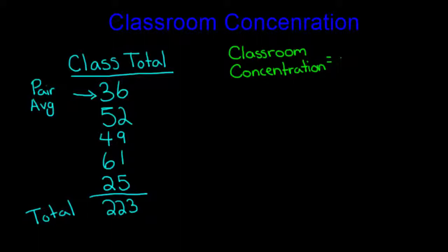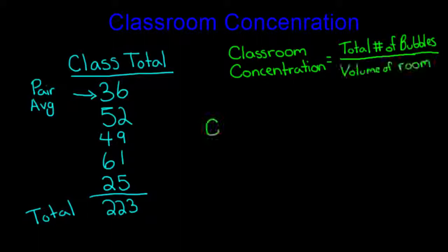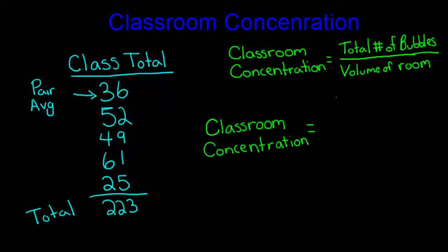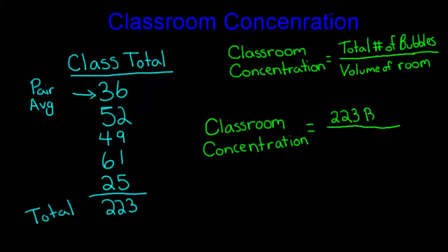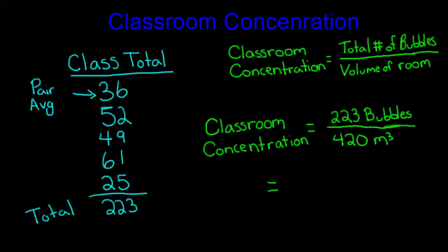You can then determine the classroom concentration of bubbles by dividing the total number of bubbles by the volume of the classroom. For our example, we had 223 total bubbles, which would then be divided by our classroom volume of 420 cubic meters. This gives us a classroom concentration of 0.53 bubbles per cubic meter.